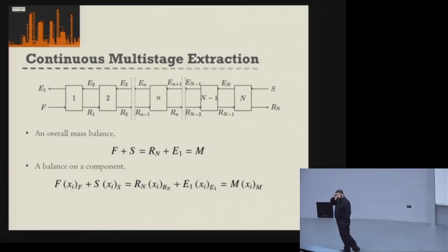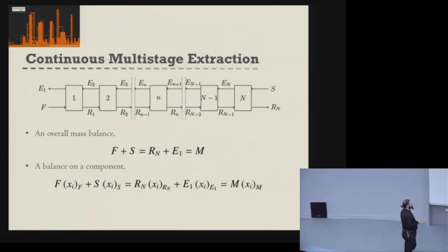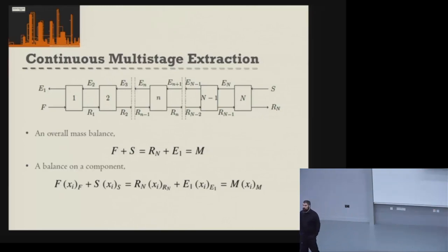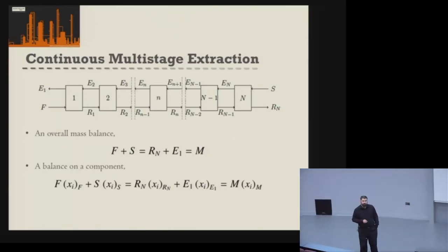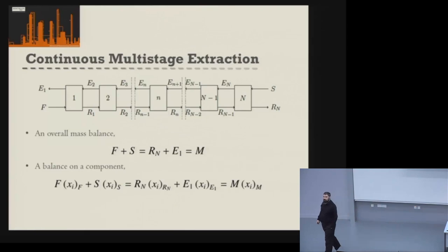Very similar to what we did last week for the single-stage extraction system, we thought about our whole process and could look at a mass balance around essentially one separation. But now we've got a multiple equilibrium system — we have N multi-stage equilibriums in our system.